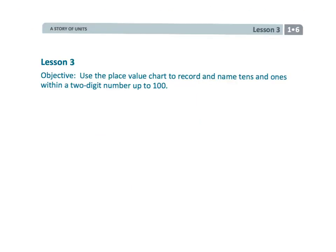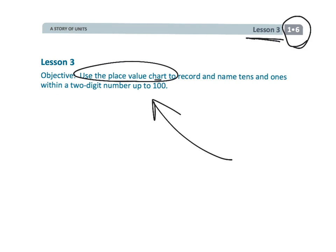And that wraps up the beginnings of place value. We have first grade module six, lesson three, using that place value chart to talk about numbers up to 100.